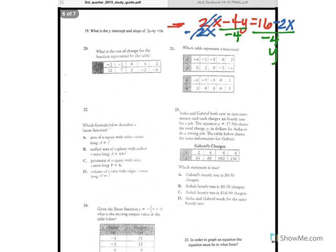So we're left with y equals, and then you divide these, so negative 2 divided by negative 4 is going to give you a positive 1 half x, and then 16 divided by negative 4 is going to give you a negative 4.